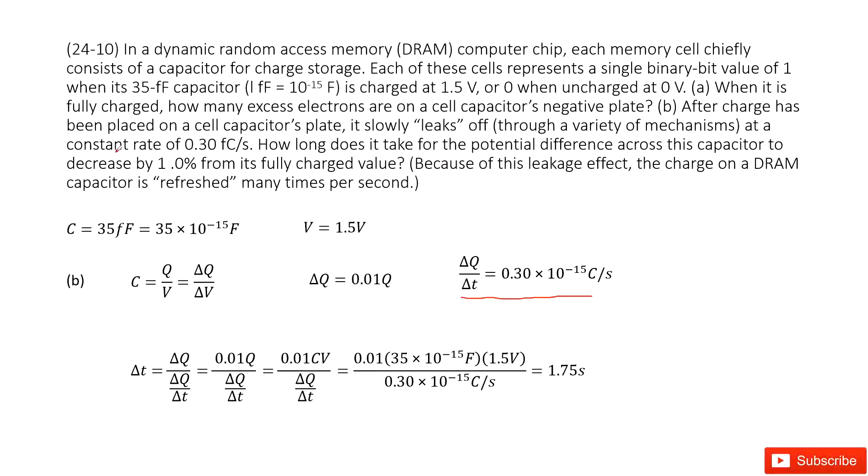the capacitor will decrease by 1% from its fully charged value. It asks you how long it will take. So it's asking for the time it takes for the capacitor's charge to decrease by 1%. That means the total charge change is just 1% of Q. So we write delta Q as 0.01Q.